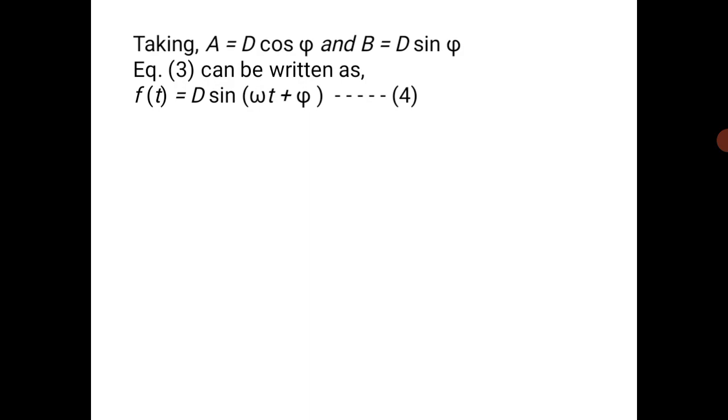If you equate this with sin(x + y), then easily we can write sin(ωt + φ), because already D is taken as common. So this one is f(t). Clearly it is also repeated. It is also the equation of simple harmonic motion. Simple harmonic motions added again give us the equation of simple harmonic motion.